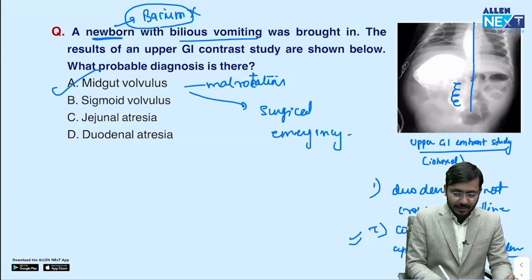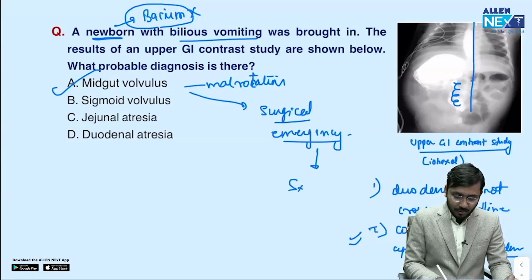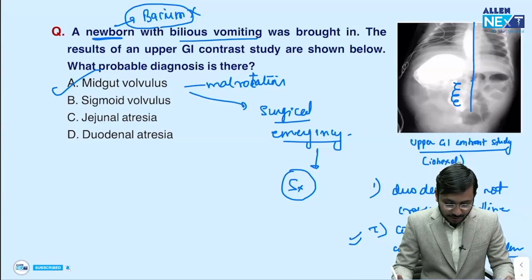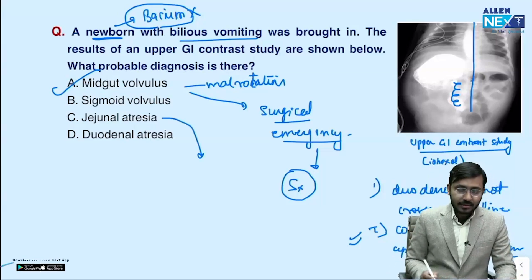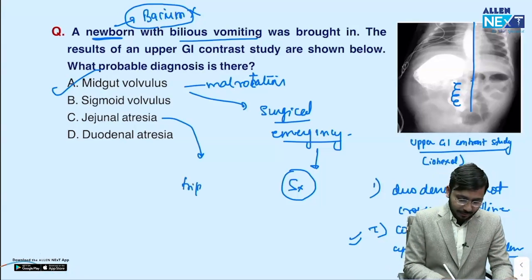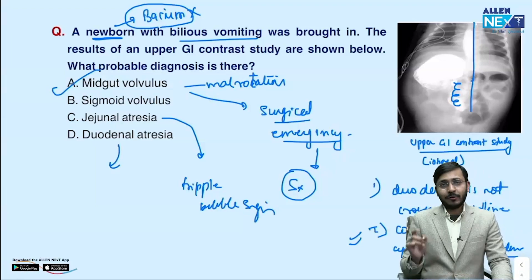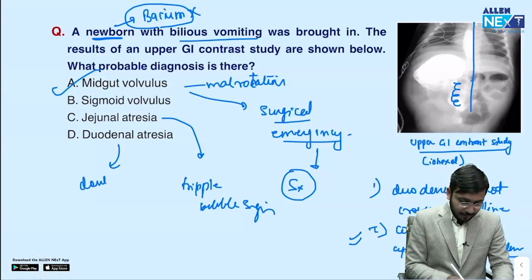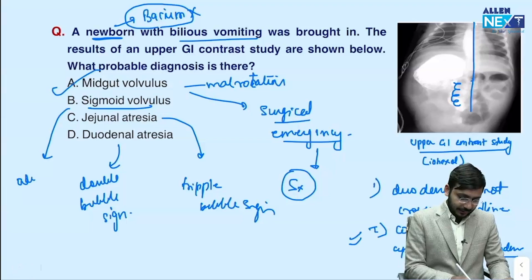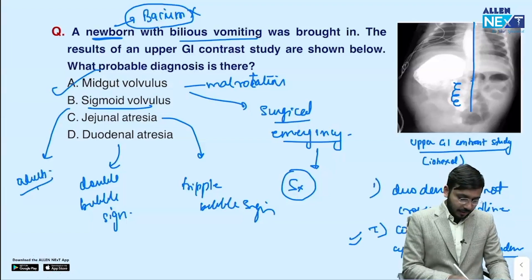For differentials: in jejunal atresia, diagnosis is by plain X-ray and we get a triple bubble sign. In duodenal atresia, again a plain X-ray diagnosis, we get a double bubble sign. Sigmoid volvulus is mainly seen in adults, not children, and on plain X-ray we get a coffee bean sign.